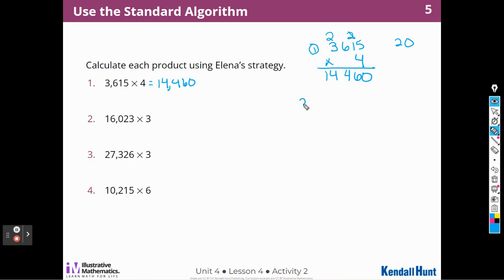Now I'm going to do number 2. 16,023 times 3. 3 times 3 is 9, and I don't have anything to carry over. 2 times 3 is 6 in the tens place because it's 20 times 3, right? So it's really 60. 3 times 0 is 0. 3 times 6 is 18. Well, I can put the 8 down here, but I'm going to have to carry that 1 over to the left so that I can use it in the next place value. 3 times 1 is 3 plus 1 is 4. So this answer is going to be 48,069.